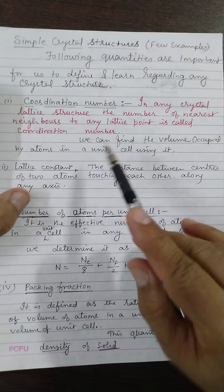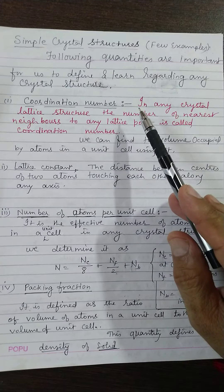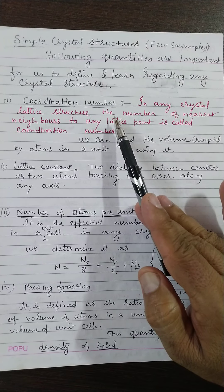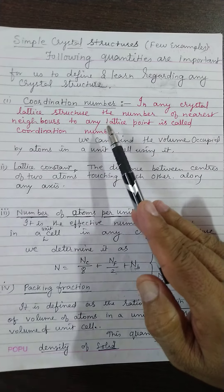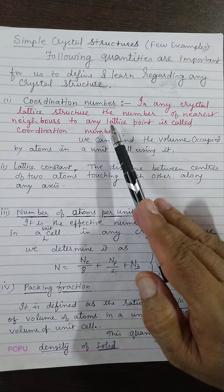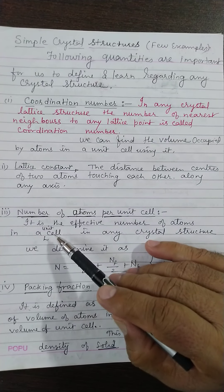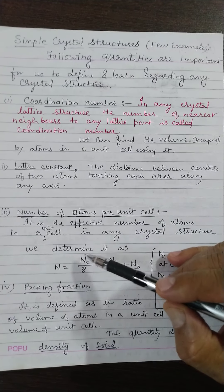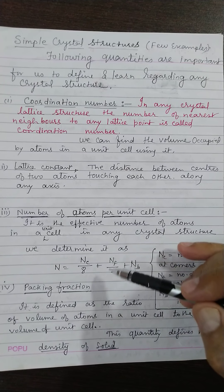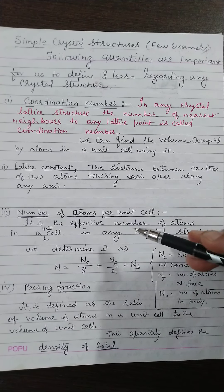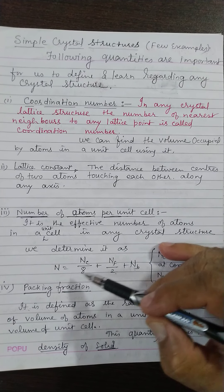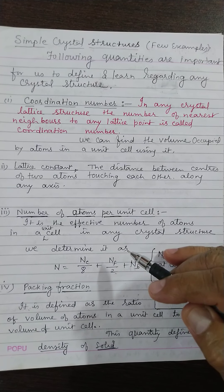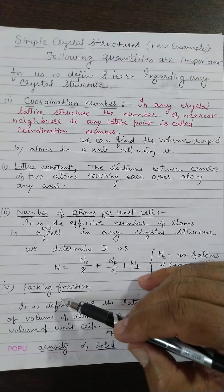In the last lecture, I told you about the basic structures of crystals and then we defined a few quantities. One of them was coordination number. Then I told you about the lattice constant. Number of atoms per unit cell is always an important parameter because in any structure, there can be atoms at the corners, at the faces, or inside the body of the cell.